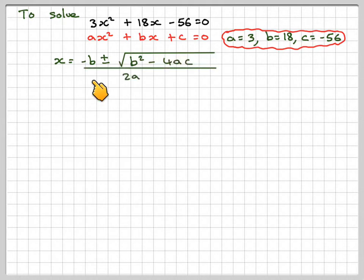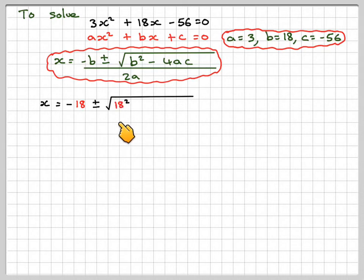So using the quadratic formula, x = (-b ± √(b² - 4ac)) / 2a, we have that x = (-18 ± √(18² - 4(3)(-56)))